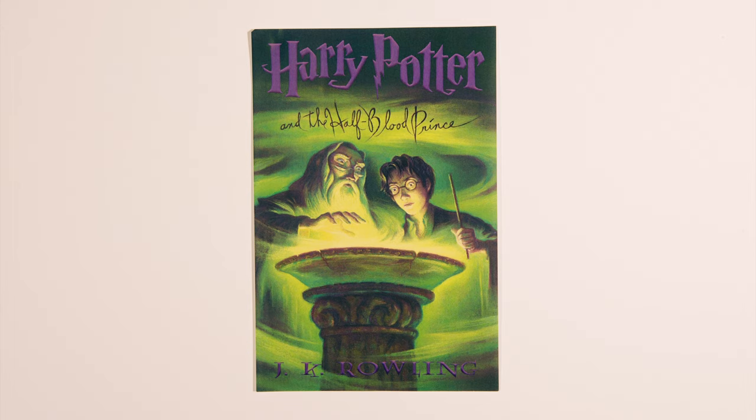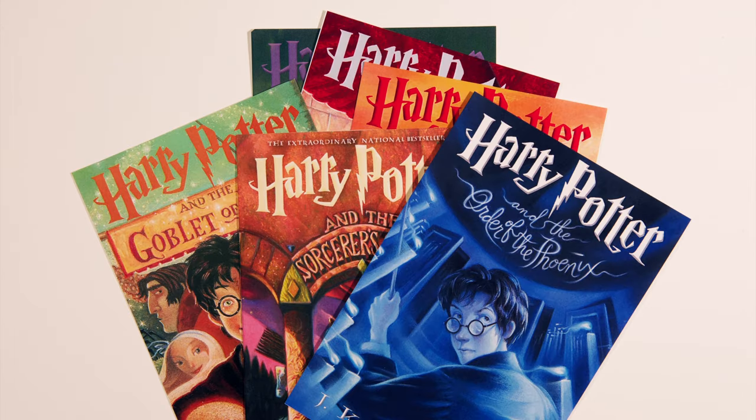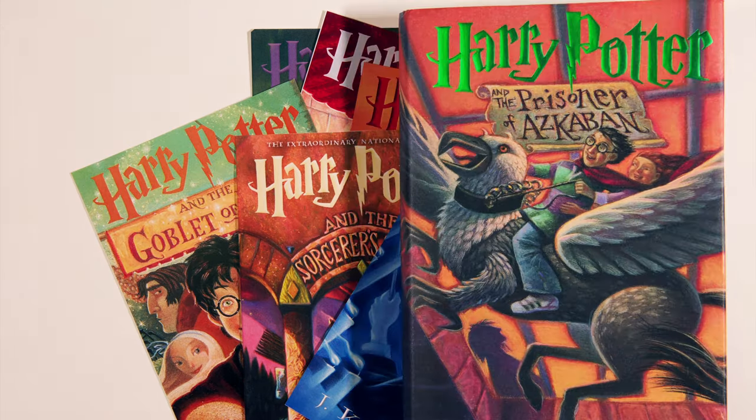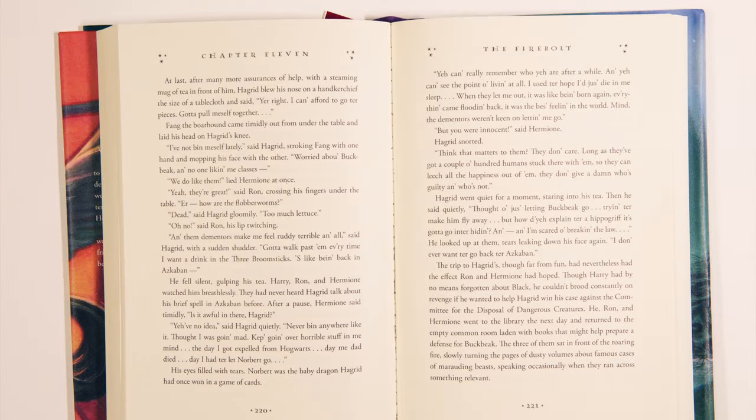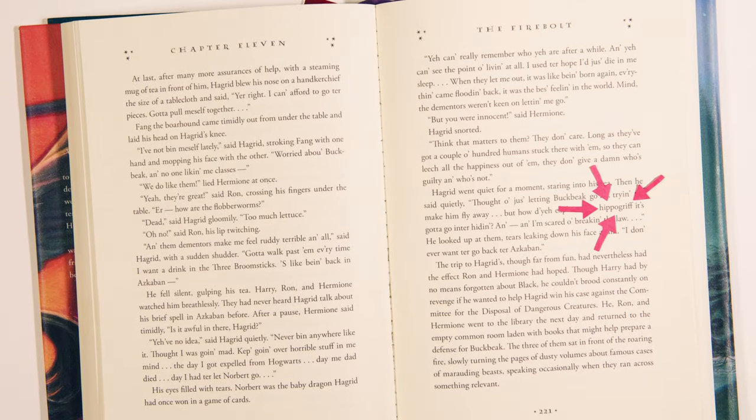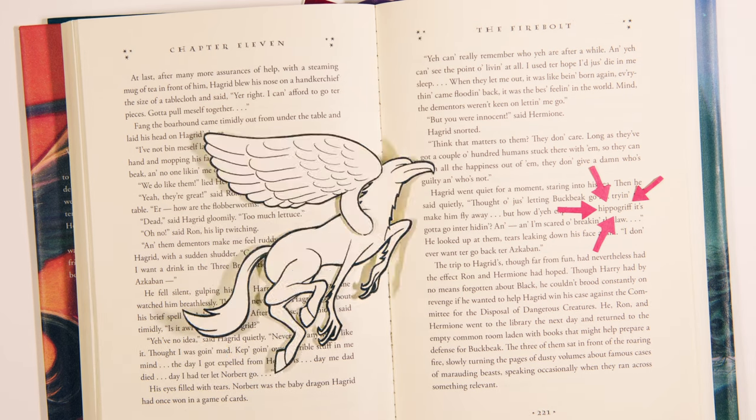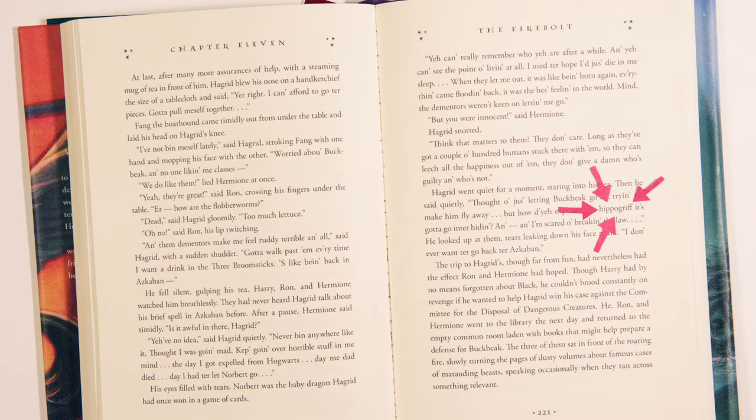The English version of the Harry Potter series has 1,084,170 words, which makes Hippogriff on page 221 of The Prisoner of Azkaban a little less than one part per million.